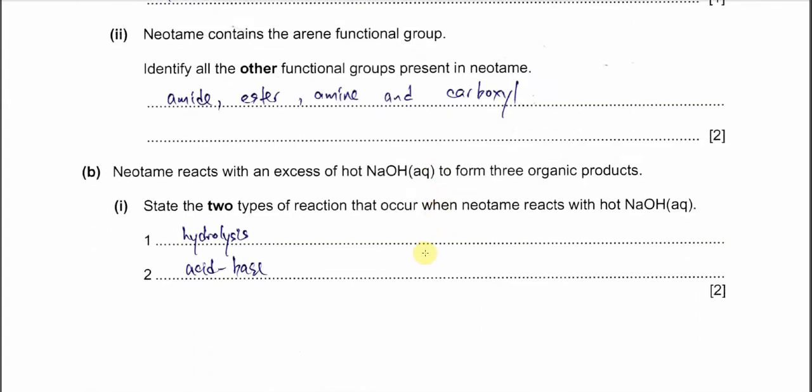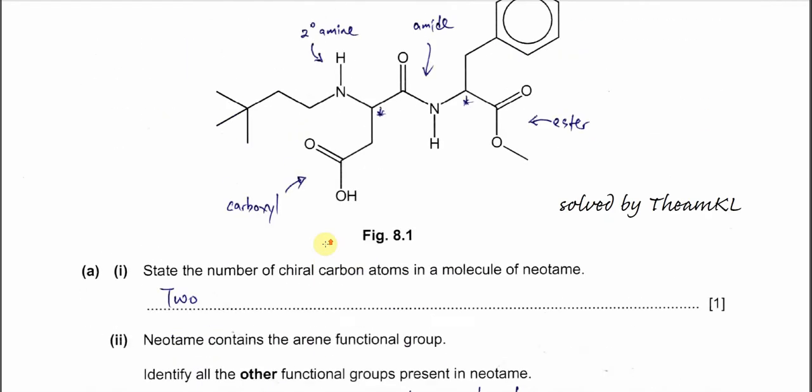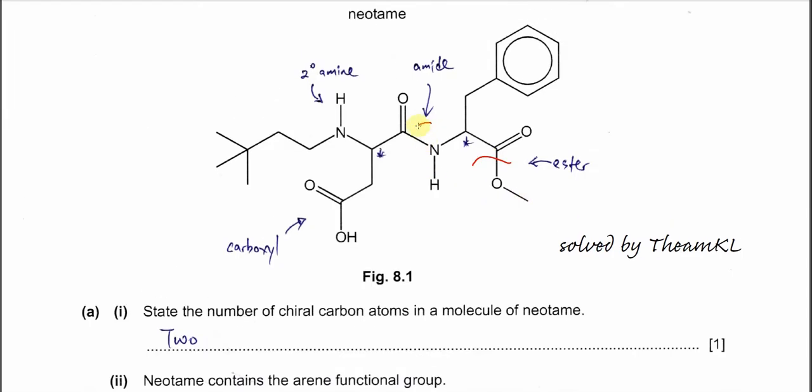Part B. Neotame reacts with an excess of hot sodium hydroxide to form three organic products. State the two types of reaction that occur when this Neotame reacts with hot sodium hydroxide. First, when we use sodium hydroxide, the ester group will undergo hydrolysis. This one, and of course amide also undergoes hydrolysis.